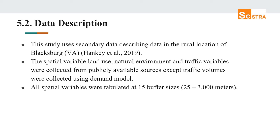This study uses secondary data describing conditions in the rural location of Blacksburg, found by Hanke and his group in 2019 at Virginia Tech. The spatial variables — land use, natural environment, and traffic variables — were collected from publicly available sources, except traffic volumes which were collected using a demand model. All spatial variables were tabulated at 15 buffer sizes ranging from 25 to 3000 meters.